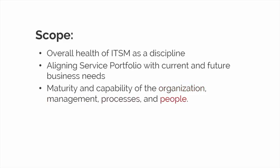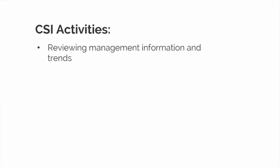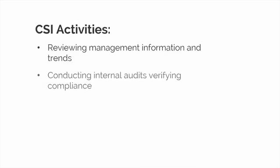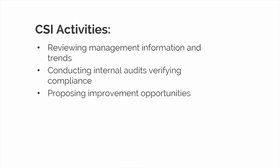To implement CSI successfully, it's important to understand the different activities that need to be applied. First, reviewing management information and trends to ensure that services are meeting agreed service levels. Second, periodically conducting internal audits verifying employee and process compliance. Third, proposing recommendations for improvement opportunities.